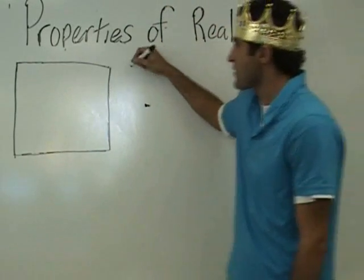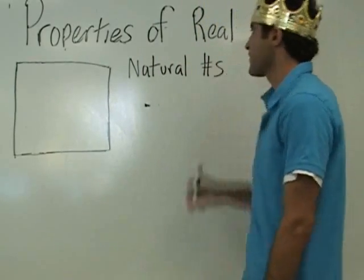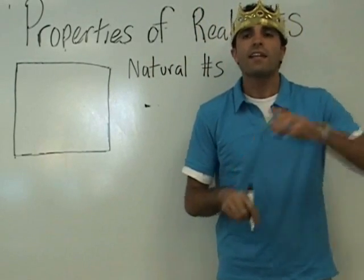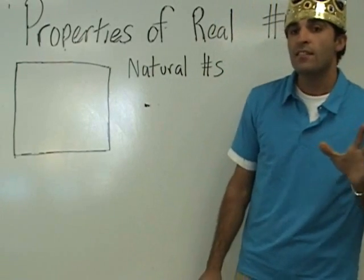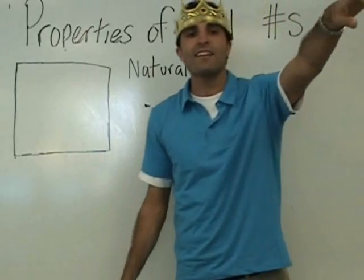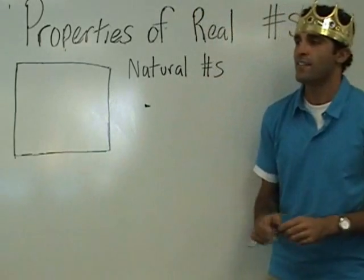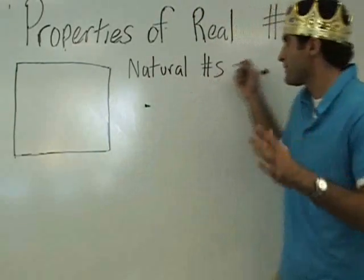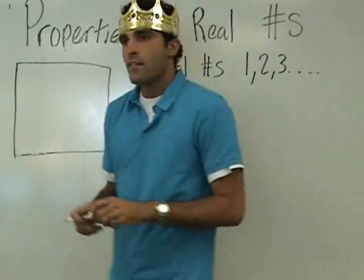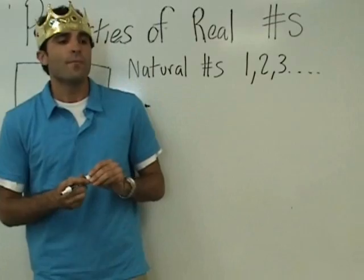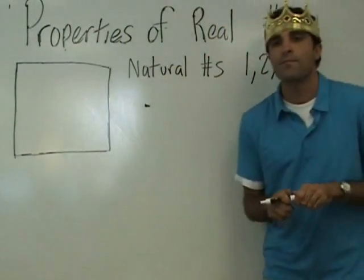Let's talk about a couple of types of numbers. The first is called natural numbers. Natural numbers basically start at one — one, two, three, and on and on. So the number five is a natural number. Is zero a natural number? No.